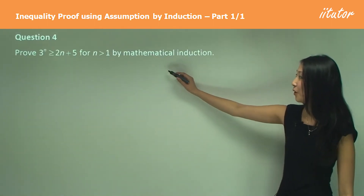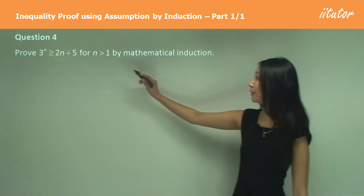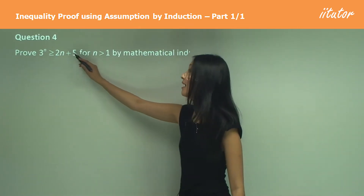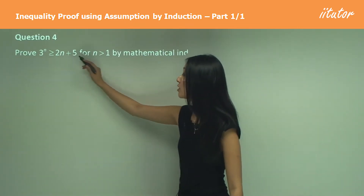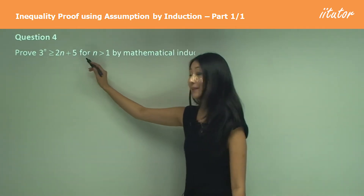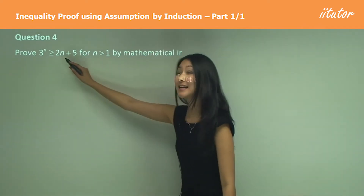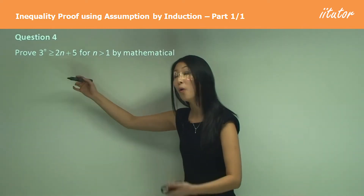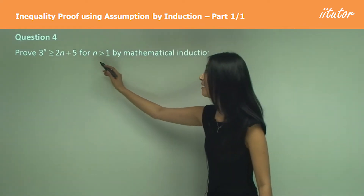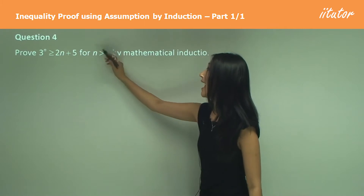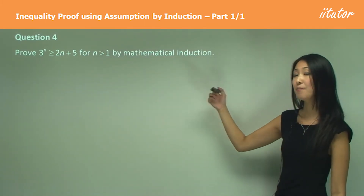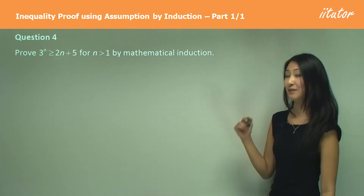In question four, we want to prove that 3 to the power of n is greater than or equal to 2n plus 5. Be careful here — it's greater than or equal to. For n greater than 1, by mathematical induction.